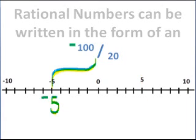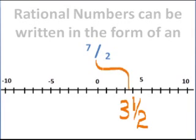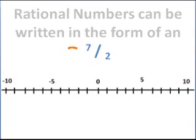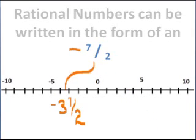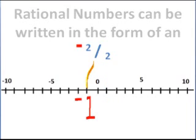If the 100 is negative or the 20 is negative, then the whole thing is negative 5. It doesn't really matter where the negative is — it can be at the 100 or on the 20, and the final result is negative 5. 7 halves fits on the number line: 1 half, 2 halves, 3 halves, 4 halves, 5 halves, 6 halves, 7 halves. 7 halves is the same thing as 3 and a half. Negative 7 halves is negative 3 and a half, and 2 over 2 is just 1. Any number over itself is just 1. If 2 is negative, then it's negative 1.